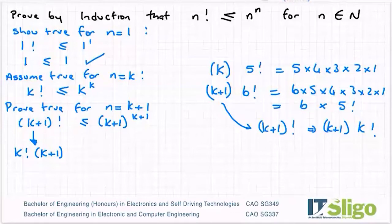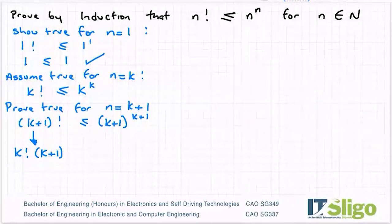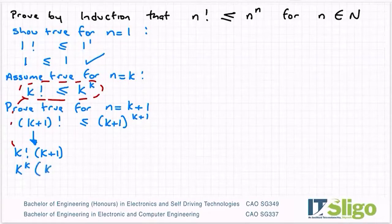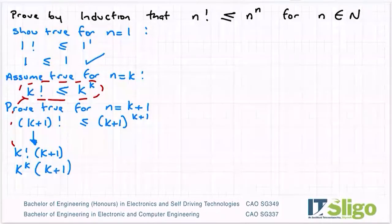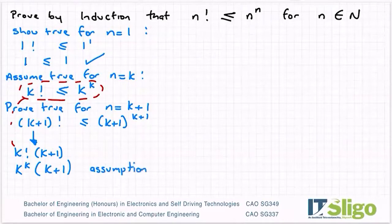Now, the reason I wanted to do that is because I want to work in my assumption that I'm making for n is equal to k. So then instead of k factorial, I'm going to sub in k to the power of k. So this is k to the power of k times k plus 1. And just I'm going to write a note here, that is the assumption taken from n is equal to k. And then I'm comparing this with what I have here.